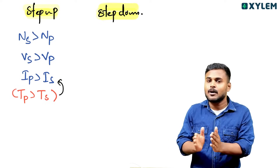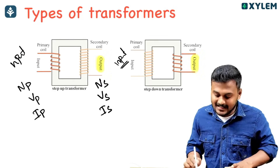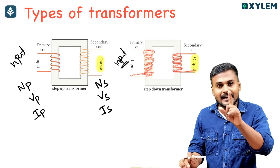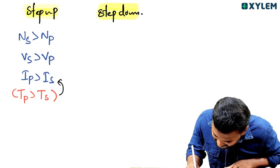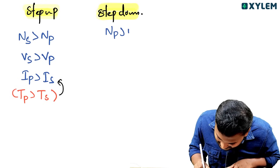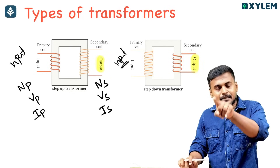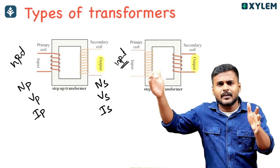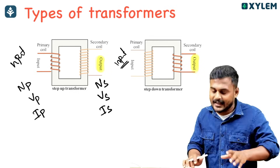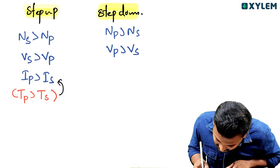If we look at a step-down transformer, it is similar but reversed. For step-down, Np is greater than Ns. Similarly, VP is greater than Vs — the primary voltage is greater than the secondary voltage.